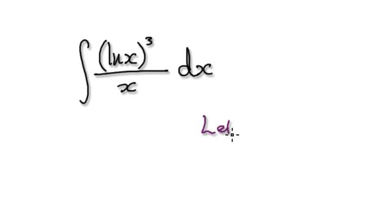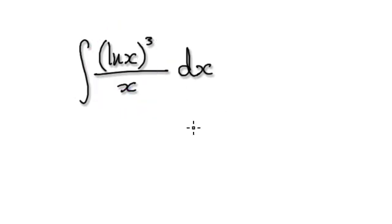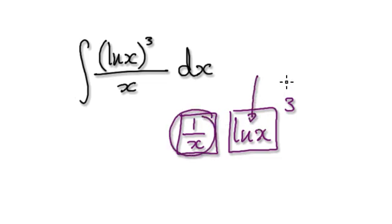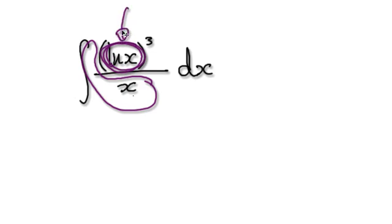To do this, try and visualize this thing here as 1 over x — that's one block — times natural log of x to the power of 3. If you look at this block here, this thing here is the exact derivative of what's in this other block here.